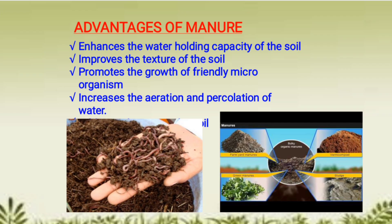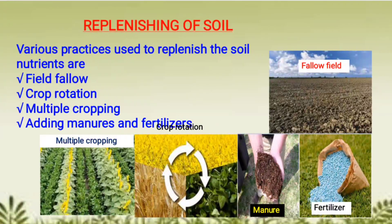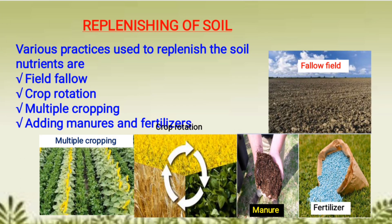There are different ways by which soil can be replenished with nutrients. The first practice is field fallow — we can leave the land fallow, blank, and empty for a season or a year, and residues of previous crops decompose and make the soil nutrient rich.